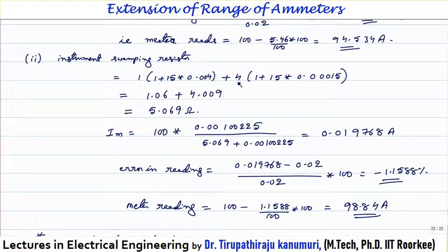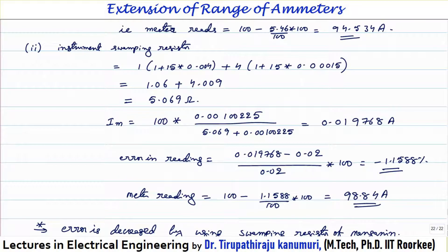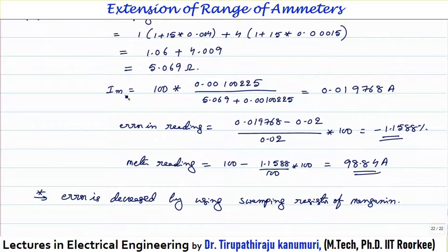Case 2 — with a swamping resistor (1 Ω copper + 4 Ω manganin in series with the meter): Copper part: 1 × (1 + 15 × 0.004) = 1.06 Ω. Manganin part: 4 × (1 + 15 × 0.00015) = 4.009 Ω. Total Rm_new = 5.069 Ω. The new meter current ≈ 0.019768 A, giving an error of only −1.158%. Compared to −5.46% in Case 1, the error is drastically reduced.